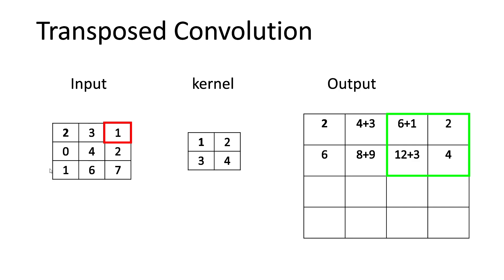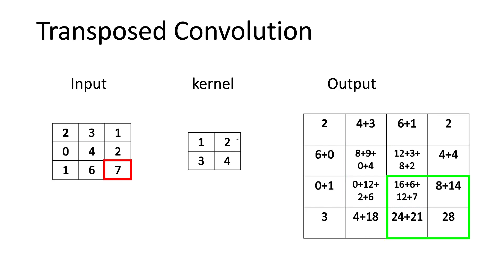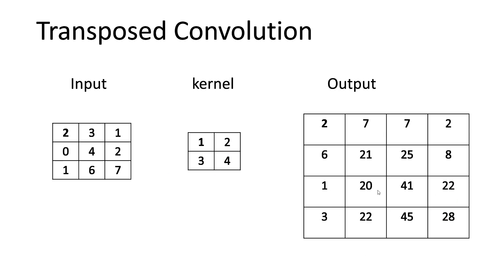After completing one row of input, we go back to the left and move one step down, just like in convolution. We consider the next input element, multiply it by the entire kernel, and place the result in the corresponding green output box. Since a zero input element multiplied by the kernel gives all zeros, those contribute zero. After completing all input elements and summing overlapping contributions, we get the final output.